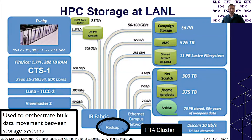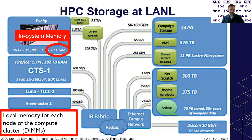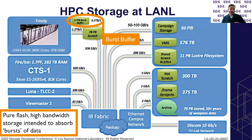Getting into the storage systems themselves: first, each cluster has in-system memory — actual DIMMs located in the individual compute nodes. Down a tier below that, we have what we call burst buffer. This is a relatively new storage tier at our laboratory — a high bandwidth, low latency, pure flash tier that sits very close to the cluster nodes themselves.